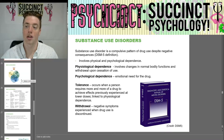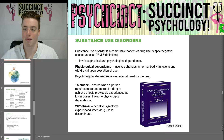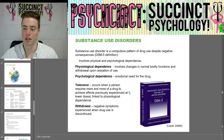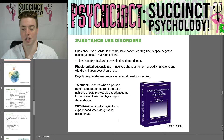Moving on from sleep disorders, we have substance use disorders. Substance use disorder is a compulsive pattern of drug use despite negative consequences — that's the DSM-5 definition. It involves physical and psychological dependence on the drug. Physiological dependence involves changes in normal bodily functions and withdrawal upon cessation of use. Psychological dependence is an emotional need for the drug. Tolerance occurs when a person requires more and more of a drug to achieve effects previously experienced at lower doses. Withdrawal refers to negative symptoms experienced when drug use is discontinued.